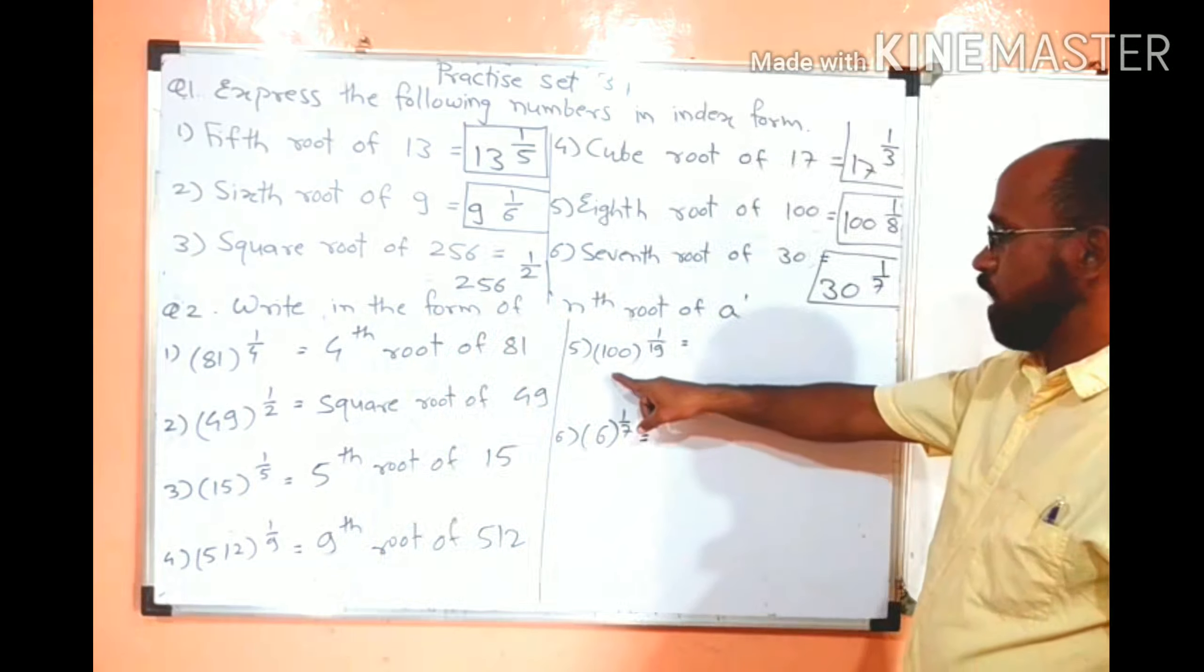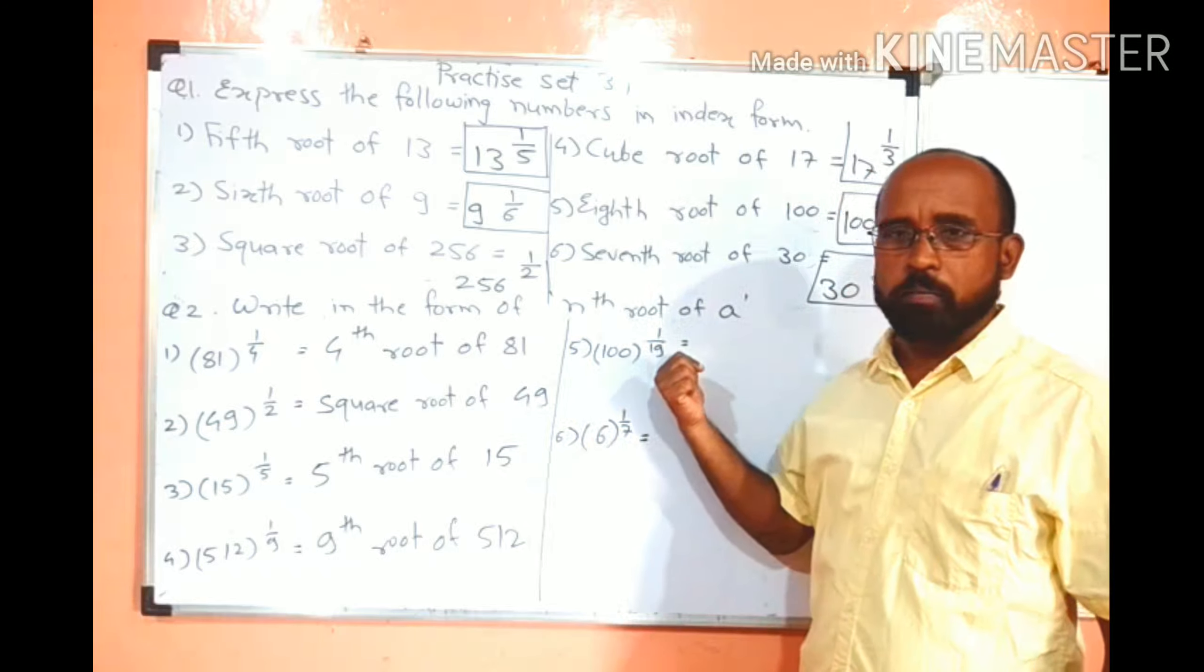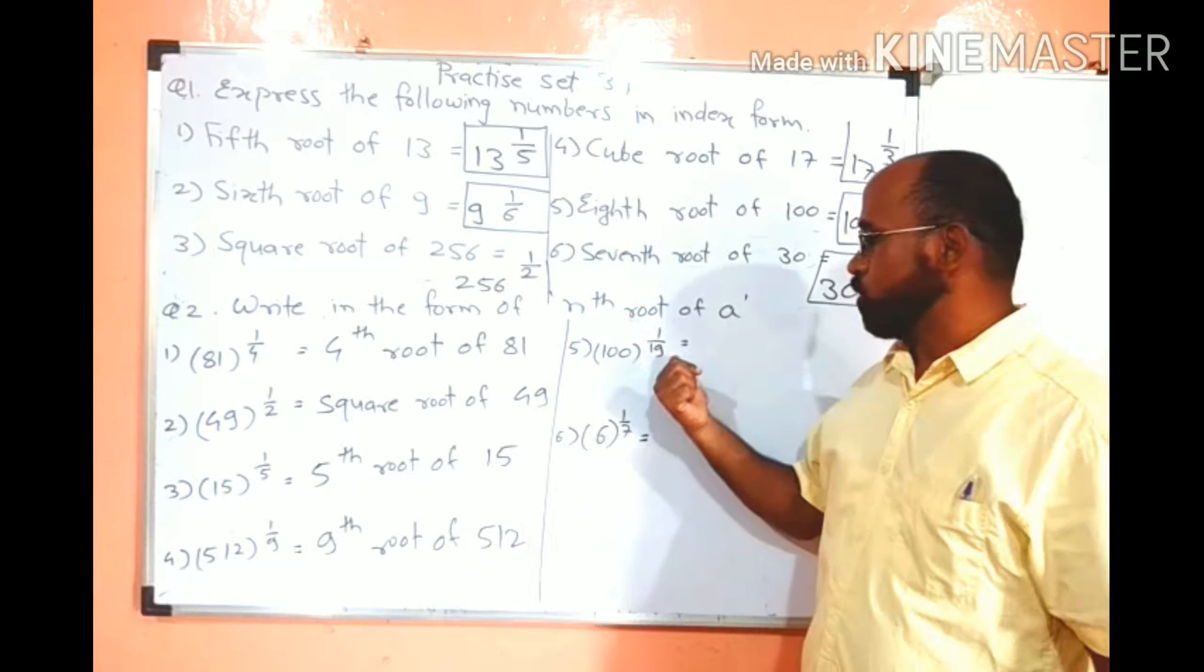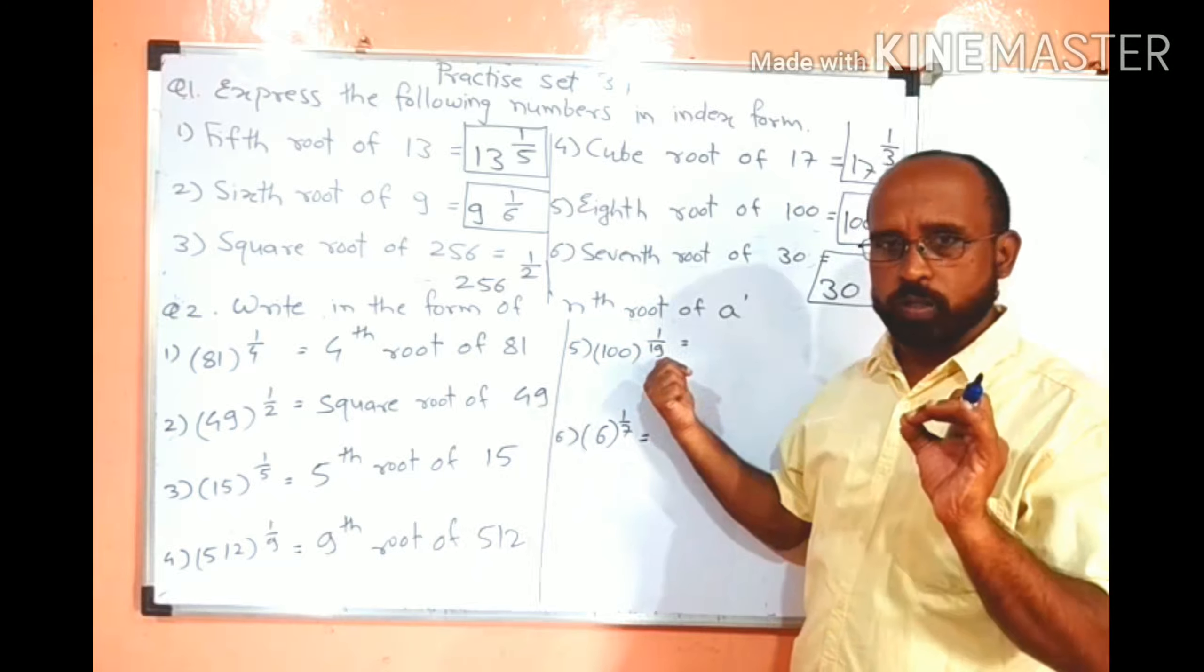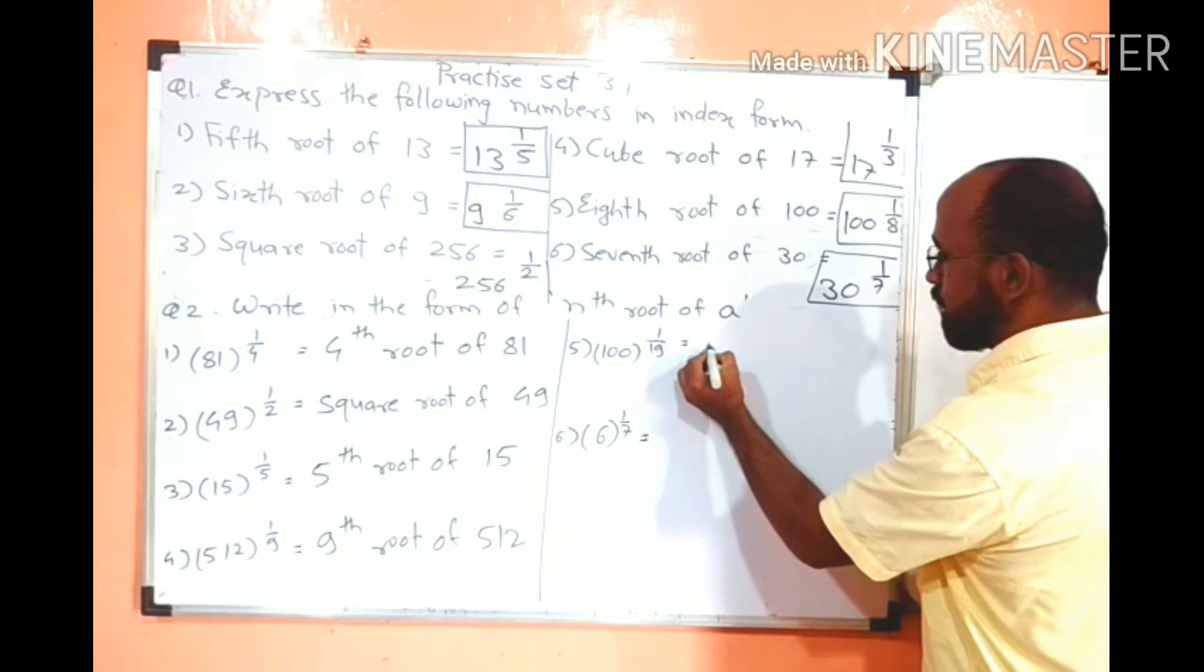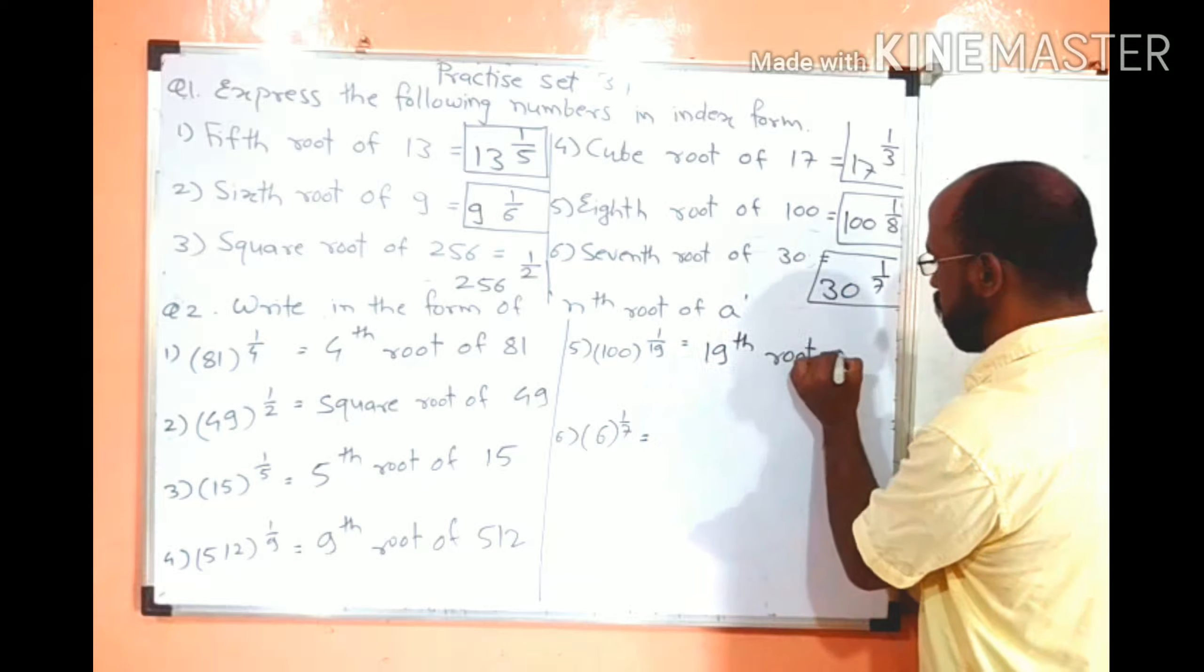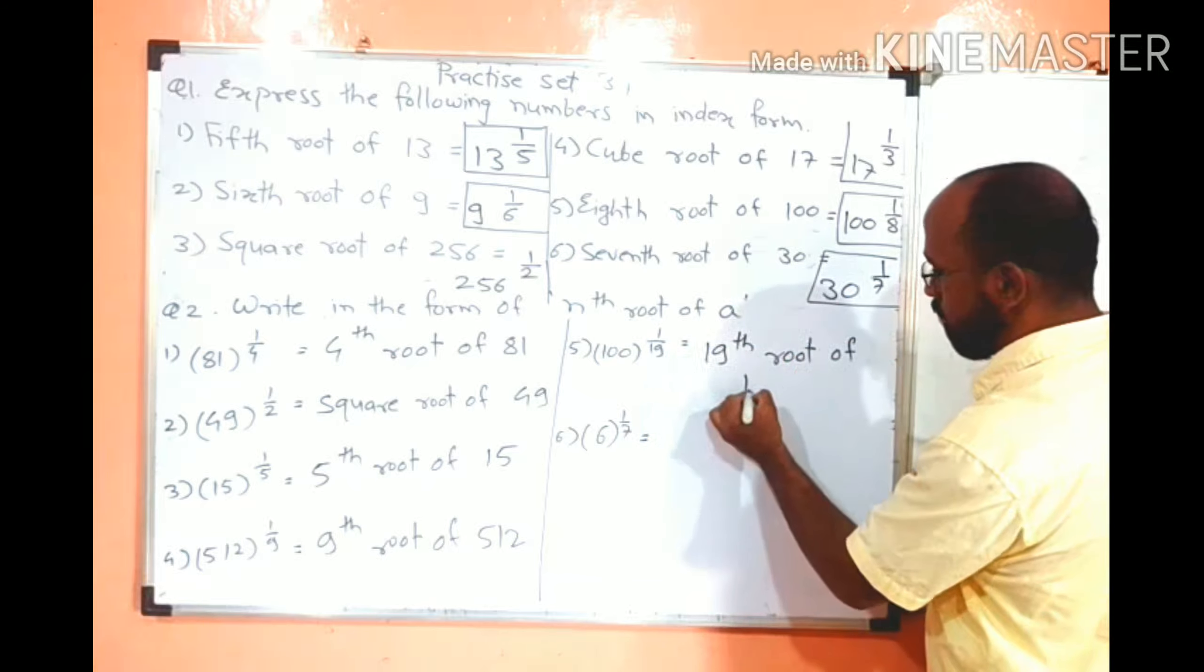100 raised to 1 upon 19. Which number is base and which number is index? 100 is base, 1 upon 19 is index. Index is not a number, it is a fraction or inverse. So 19 is nothing but root. It is not 19th index, it is 19th root. So we can write as 19th root of 100.